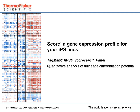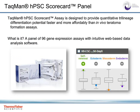Hello, and welcome to this presentation about the HPSC scorecard assay for quantitative analysis of tri-lineage differentiation potential. The PacMan HPSC scorecard system was introduced in 2013 and is the only test for tri-lineage differentiation potential that includes both a panel of gene expression assays and accompanying cloud-based analysis software. The gene panel is provided in a convenient pre-plated format compatible with both 96-well fast and 384-well block configurations. On the right is a snapshot of the updated analysis software interface, which we will cover in detail later in this presentation.